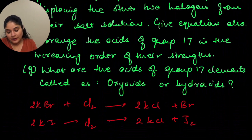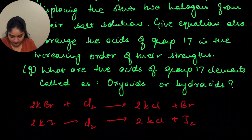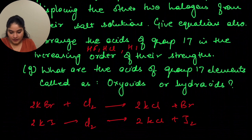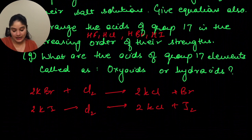Arrange the acids of group 17 in the increasing order of their strength: HF, HCl, HBr, and HI. What are the acids of group 17 elements called? They are known as hydroacids.